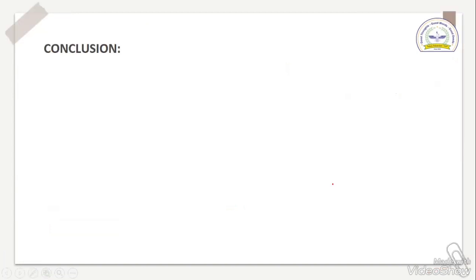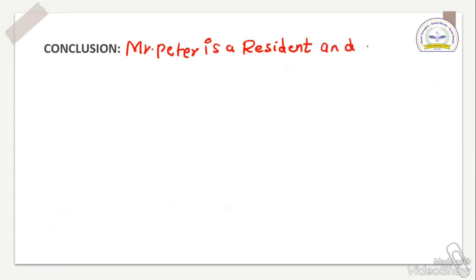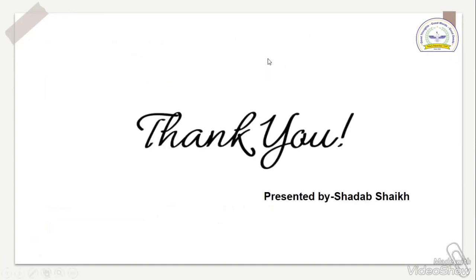So what is our conclusion, students? Mr. Peter is a resident and ordinary resident because he has satisfied both the additional conditions. Here we have completed this sum. Thank you and bye to all.